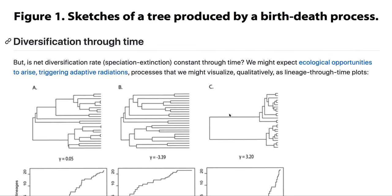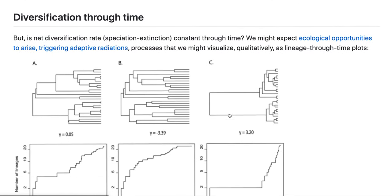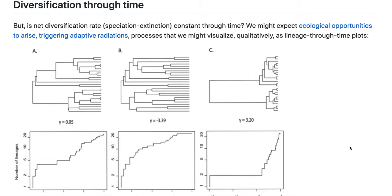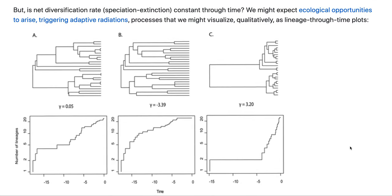Now then, so far we just assumed that both of these rates are constant through time. But maybe that's not always the case. Maybe there are circumstances in evolution where all of a sudden things are good and there's a lot of rapid diversification. Or maybe during some interval things are bad and there's a lot of extinction.